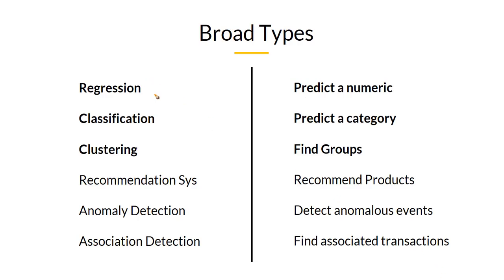The top six different categories of machine learning problems are regression, classification, clustering, recommendation systems, anomaly detection, and association detection.